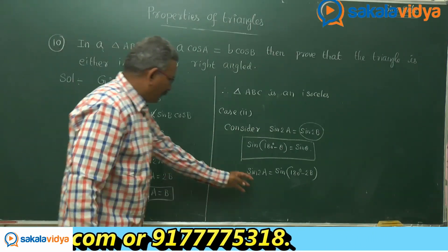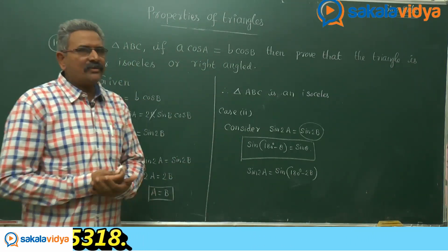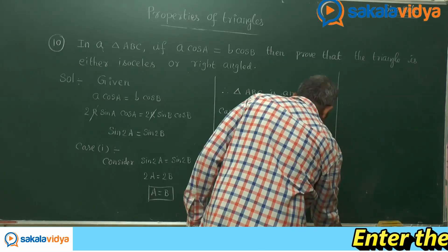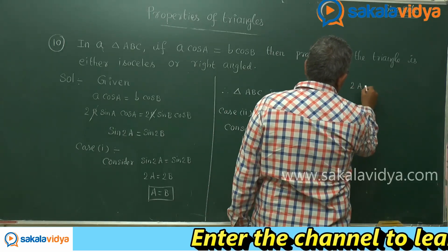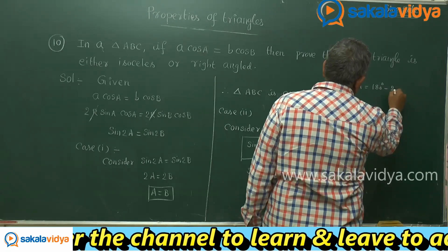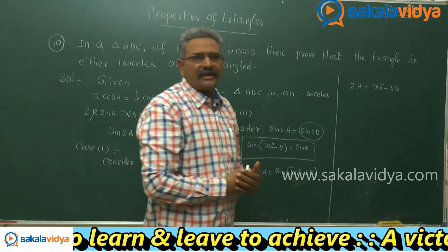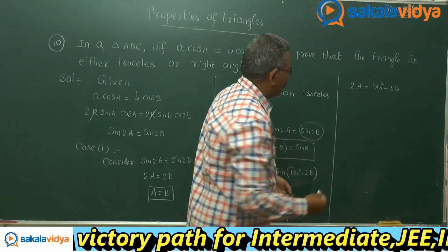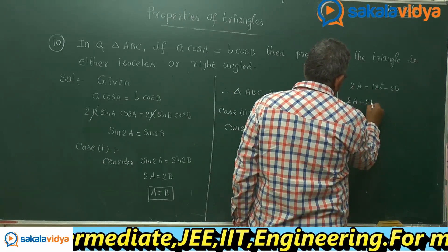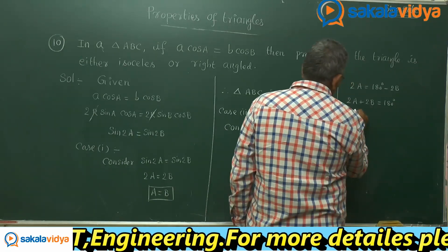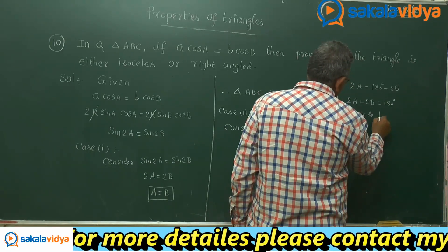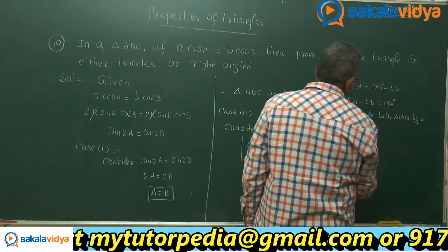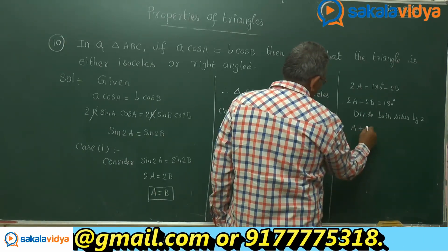Equating the two, since sinθ equals sinα implies θ equals α, we write 2A equals 180° - 2B. Transposing -2B to the left-hand side gives 2A + 2B equals 180°. Dividing both sides by 2, we get A + B equals 90°.